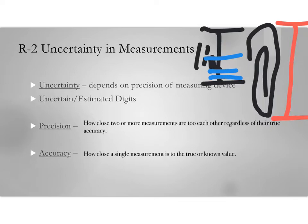All measurements have uncertainty — we can't avoid it. But we need to understand, going forward in any science class, how do we think about the uncertainty in the numbers we're given, and how do we minimize the uncertainty or maximize our certainty?